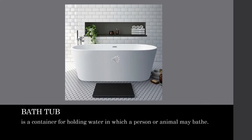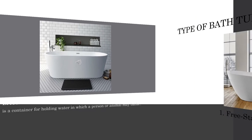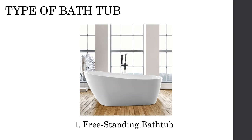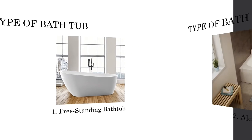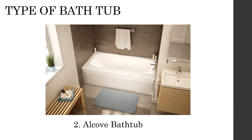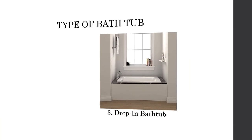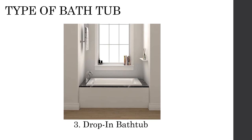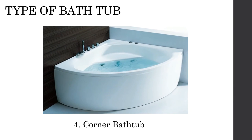A bathtub is a container for holding water in which a person may bathe. Freestanding tubs are unconnected to walls or any other surface except for the floor, and require a large bathroom to accommodate them. An alcove bathtub fits precisely within a three-sided enclosure built just for the tub. A drop-in bathtub is a shell that fits into a prepared deck. Corner tubs are large, triangular bathtubs that fit into a corner of the bathroom.